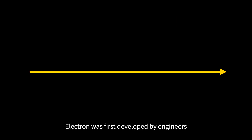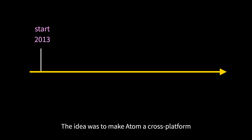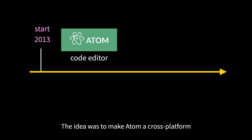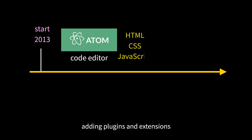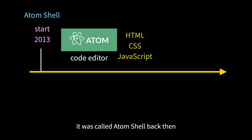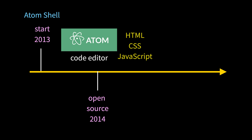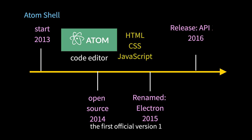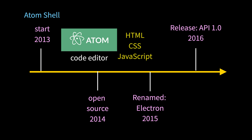Electron was first developed by engineers at GitHub in 2013. The idea was to make Atom a cross-platform code editor and allow programmers to easily improve it with HTML, CSS, and JavaScript, adding plugins and extensions. So it was called AtomShell back then. The Electron framework was then open-sourced in 2014 and renamed Electron in 2015. In 2016, the first official version 1.0 of the API was released.